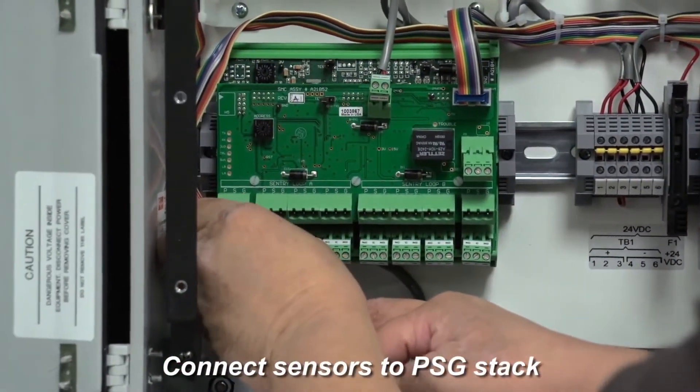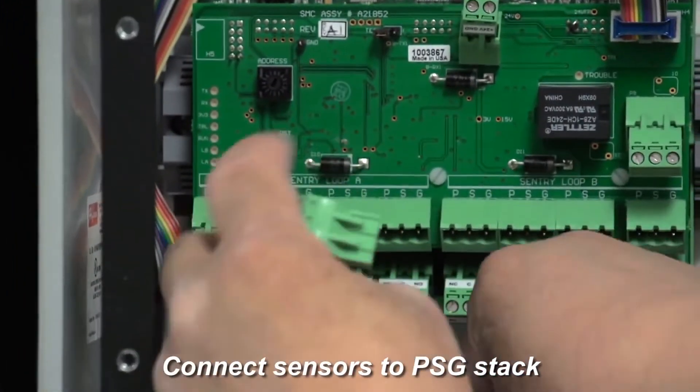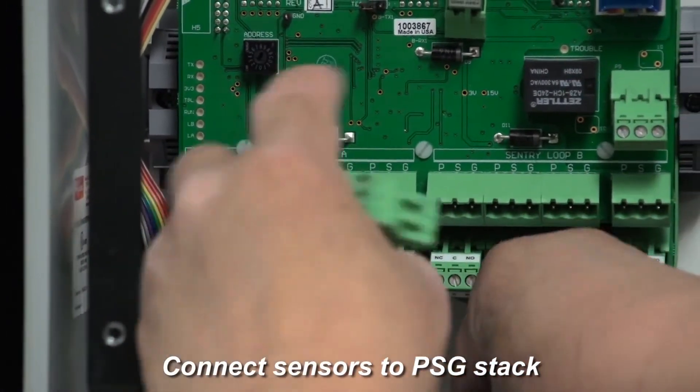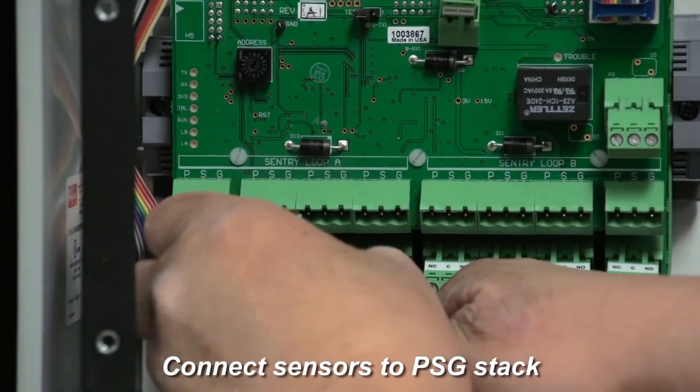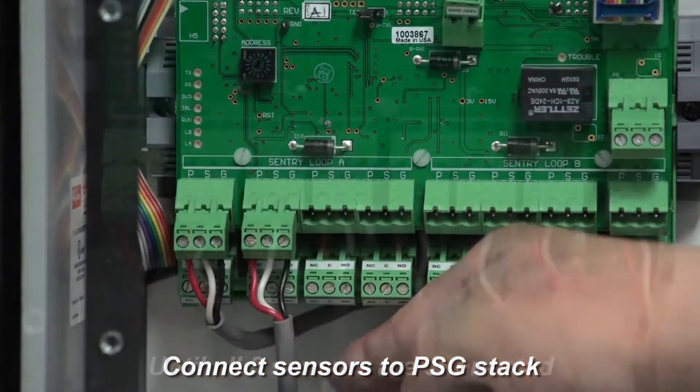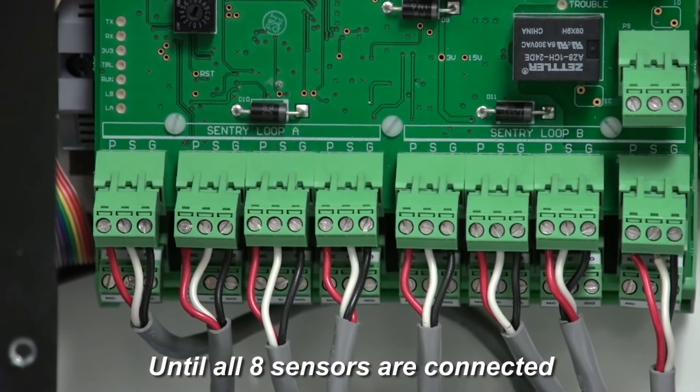Next, snap in the new green sensor cable connectors to each of the eight positions on the new PSG SentryBus interface board stack. Continue until all eight are connected.